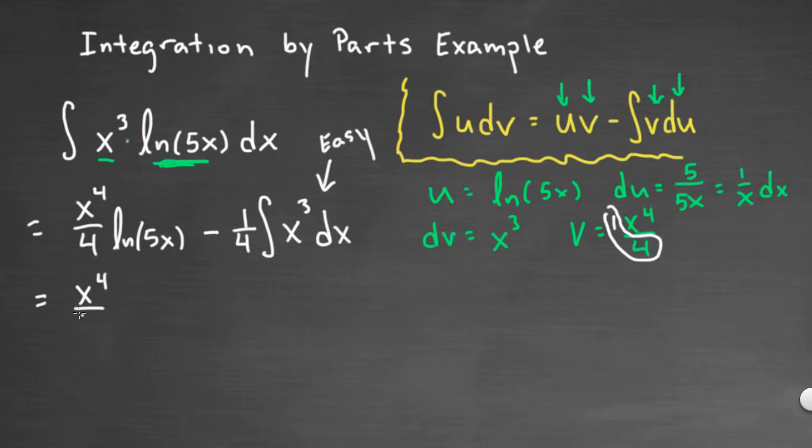So here we go, final answer. X to the 4th over 4, natural log of 5x, minus, 1/4 is a tag along constant, integral of x cubed would be x to the 4th over 4. And if you don't mind, instead of over 4, I also have another 1/4, so it'll be over 16, and then we'll have our plus C at the end.